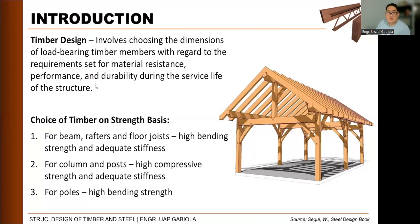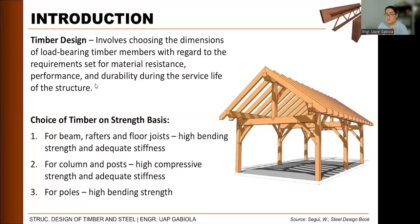Since timber is composed of different species, you cannot use just any species without considering its properties. For beams, rafters, and floor joists, the species must have high bending strength and adequate stiffness, because a beam carries load along its length and has a tendency to buckle or develop bending moment — it needs high bending capacity so it doesn't break. For columns and posts, high compressive strength with adequate stiffness is required.